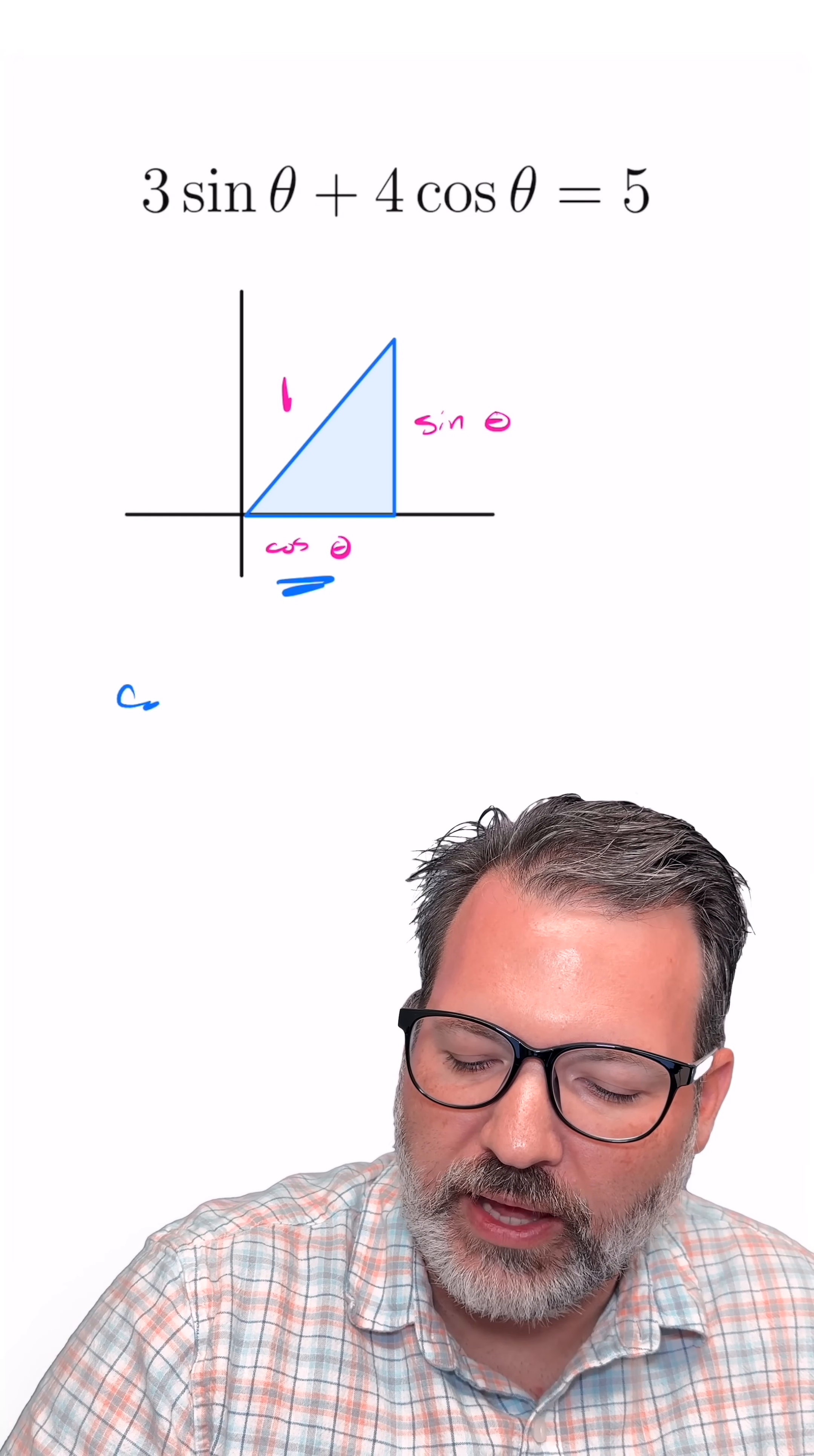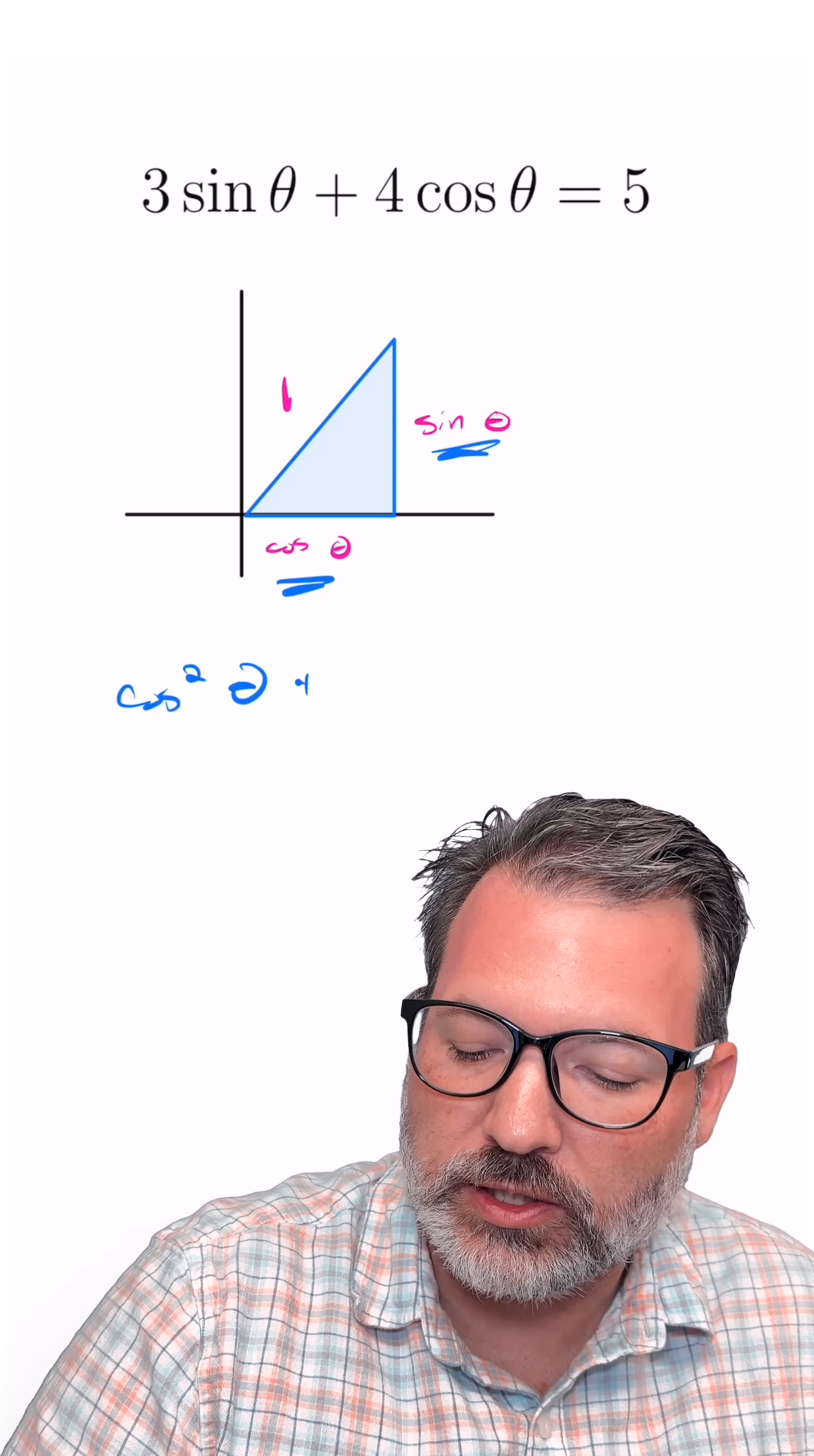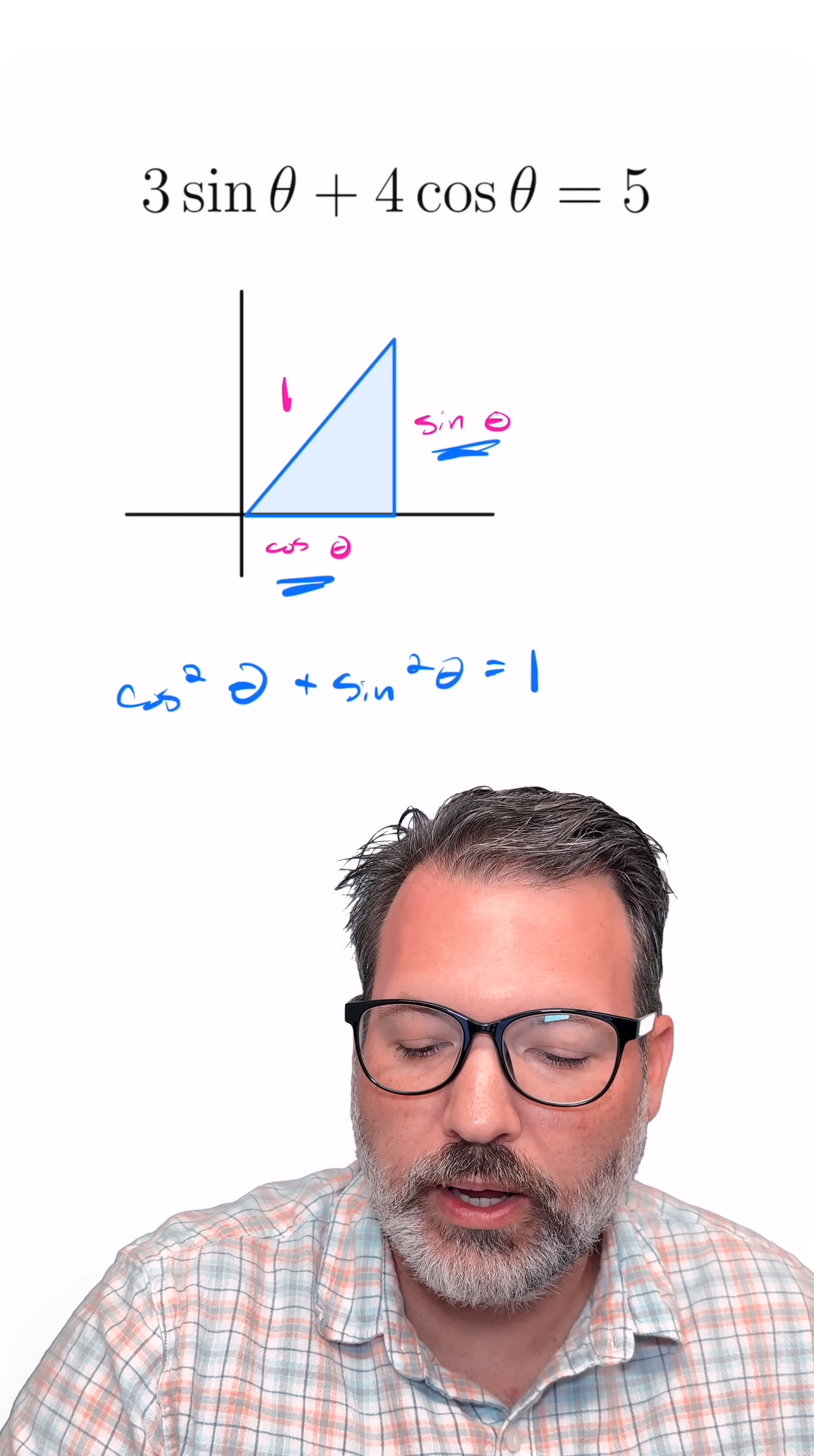Whatever this value is for the left to right leg, if we square that value and then add that to the square of the length of the up and down leg, we should get the length of the hypotenuse squared. One squared, of course, is one,